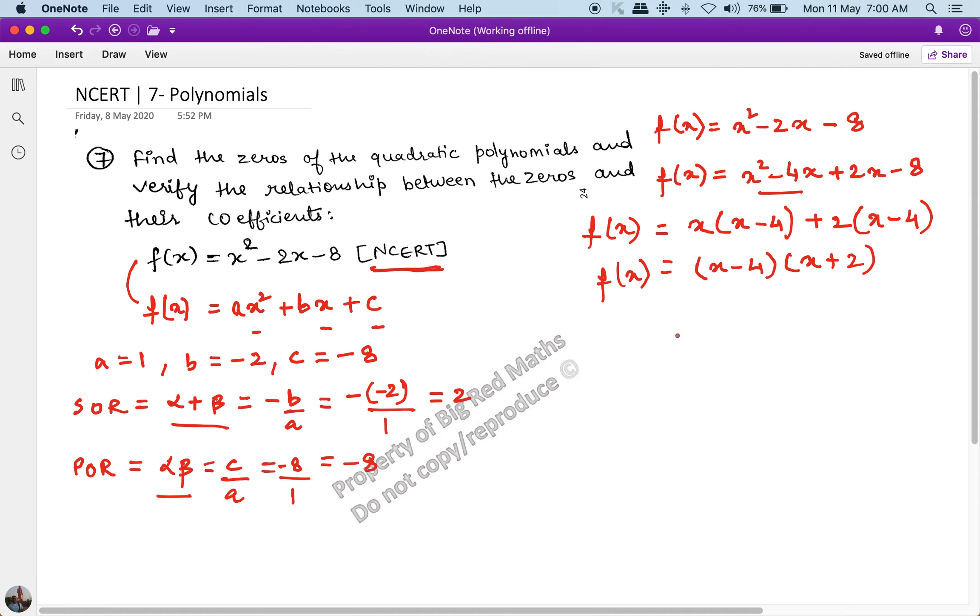So f(x) becomes this. If I equate the zeros, I get if x - 4 = 0, that tells me x = 4. And if I equate x + 2 = 0, then I get x = -2. So let my α = 4 and my β = -2.